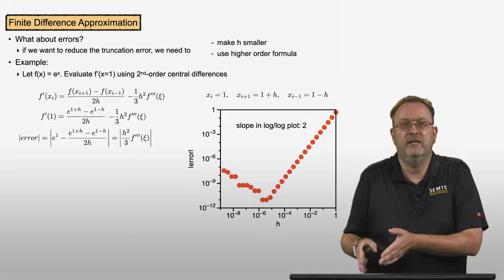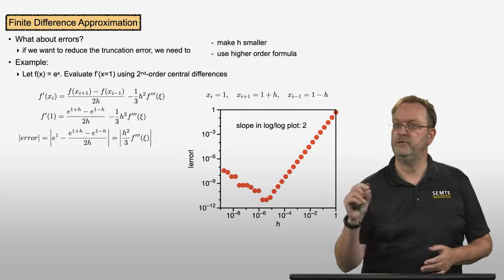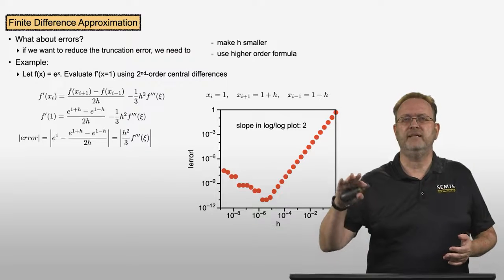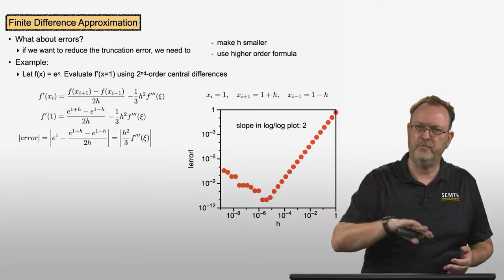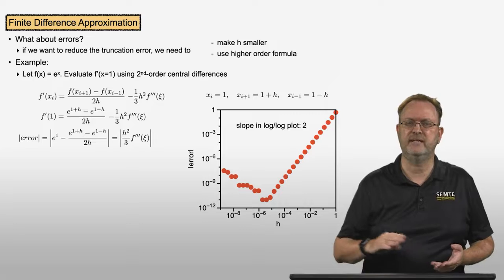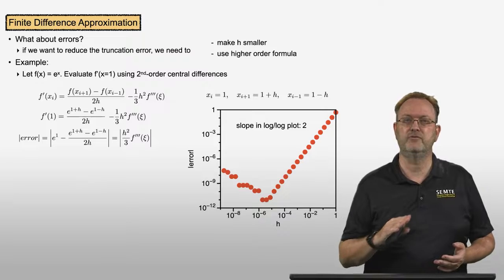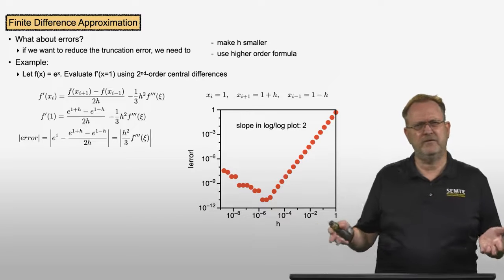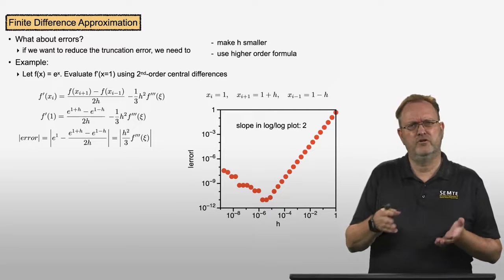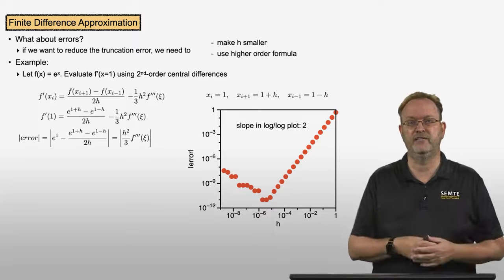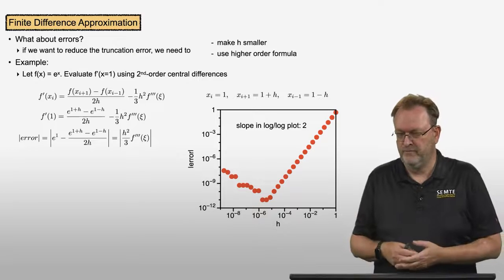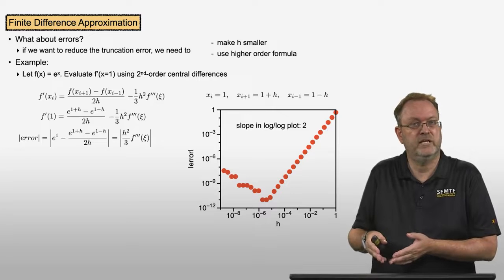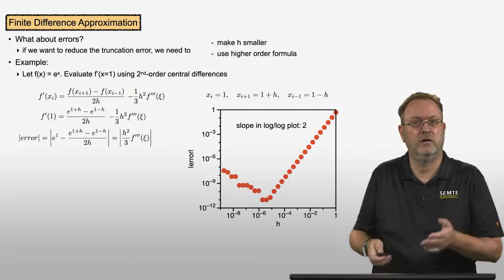Now if I keep on decreasing my spacing between adjacent points, something interesting happens. Instead of the error going further down and becoming smaller and smaller, the error will actually start to increase. This is very strange, because making the spacing between points smaller should improve my results. But from some point of h, making h smaller seems to make my error larger.